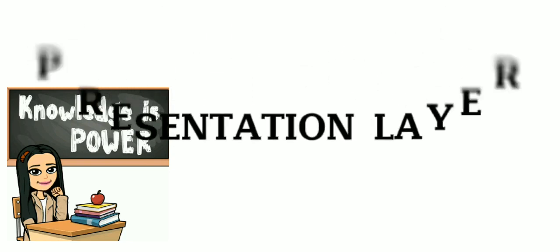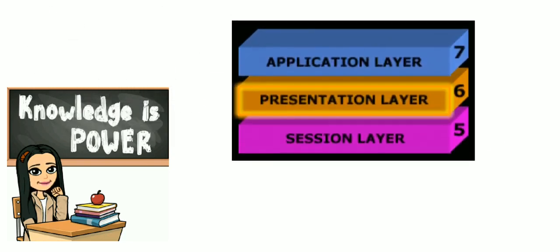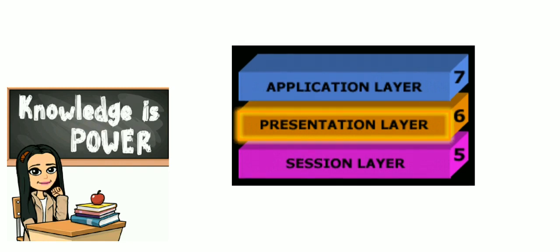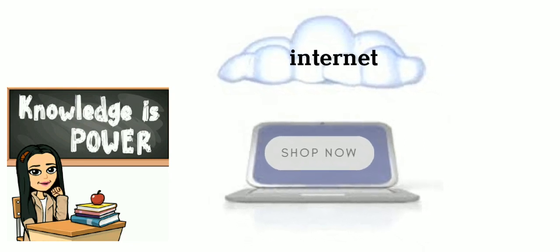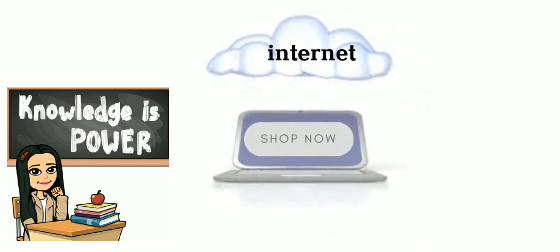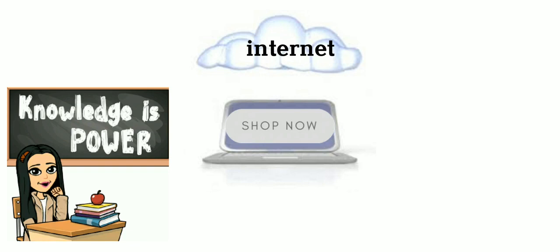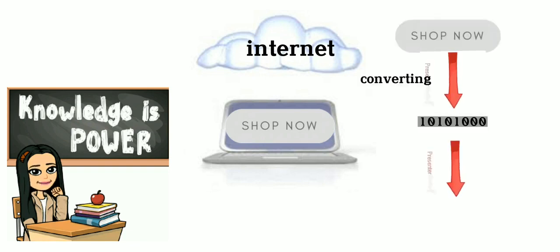Presentation layer: The presentation layer is the layer of the OSI model that establishes context between application layer entities. This layer is responsible for converting data into semantics understood by an application. It formats the data by compression, encryption, etc., and then sends it to further other layers. It is the translator of the networking model.